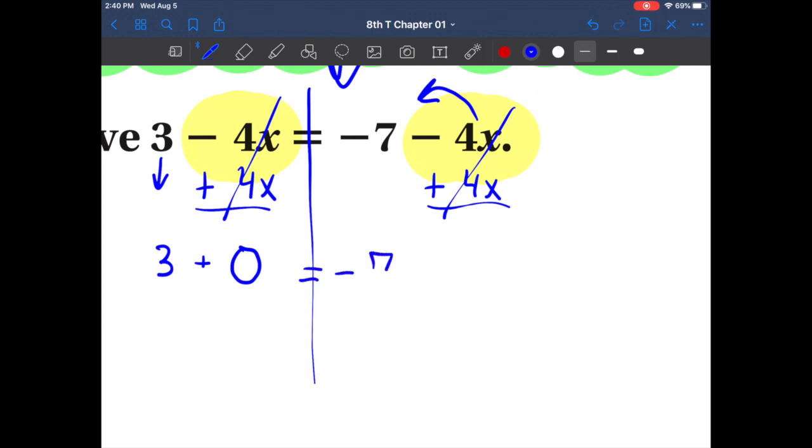I bring down that 3. Remember positive 0 cannot be positive or negative, so it's just going to be 3 plus 0 equals negative 7. Now here's my question before I even answer any of this: do I need to have this 0 here? Think about that. 3 plus 0, do I need to have that there? I don't. So I'm actually going to erase that 0 and I'm just going to rewrite the problem. So it's 3 equals negative 7. Now this is where I'm going to stop you. I want you guys to think about this: can 3 equal negative 7? Does that even make sense?